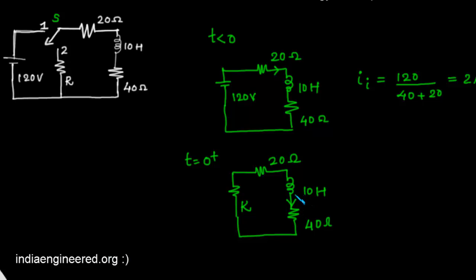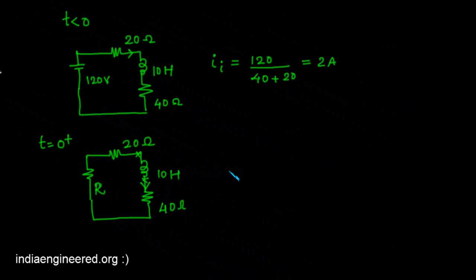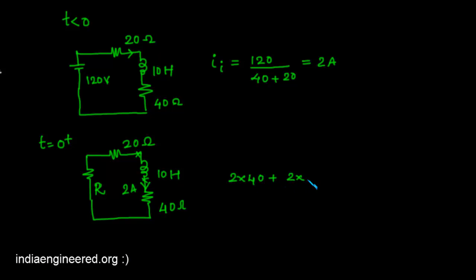It is given that at t equal to 0 plus the voltage across the coil is 120 volts. We will write the KVL to find the voltage across the inductor. With 2 amperes of current flowing, the voltage is: 2 into 40, plus 2 into R, plus 2 into 20. This equals the potential across the inductor, which is given as 120 volts.